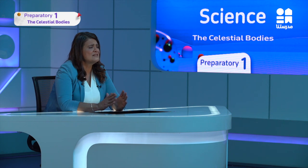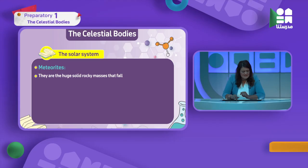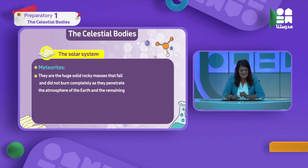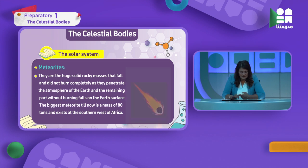...that fell in South Africa. Its weight was 80 tons. After part of it burned, the remaining rocky part fell on Earth weighing 80 tons. They are huge solid rocky masses that fall and did not burn completely. Part of them burns and they penetrate the Earth's atmosphere, and the remaining part without burning falls to the surface. The biggest meteorite till now is a mass of 80 tons, existing in southwestern Africa.